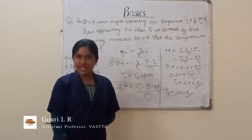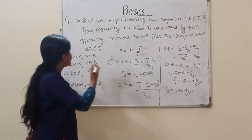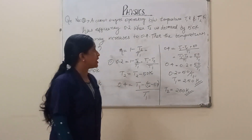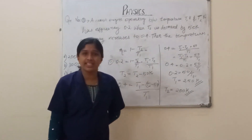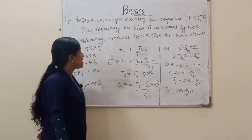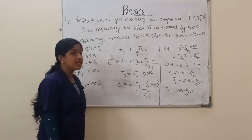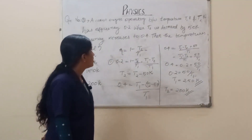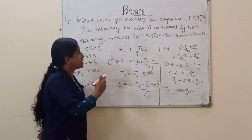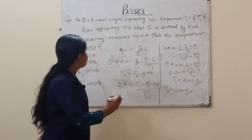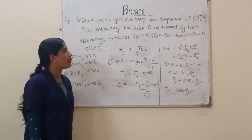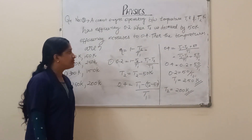Now let's go to the third question. A Carnot engine operating between temperatures T1 Kelvin and T2 Kelvin has an efficiency of 0.2. When the T2 temperature is increased by 50 Kelvin, the efficiency increases to 0.4. Then the temperatures are?